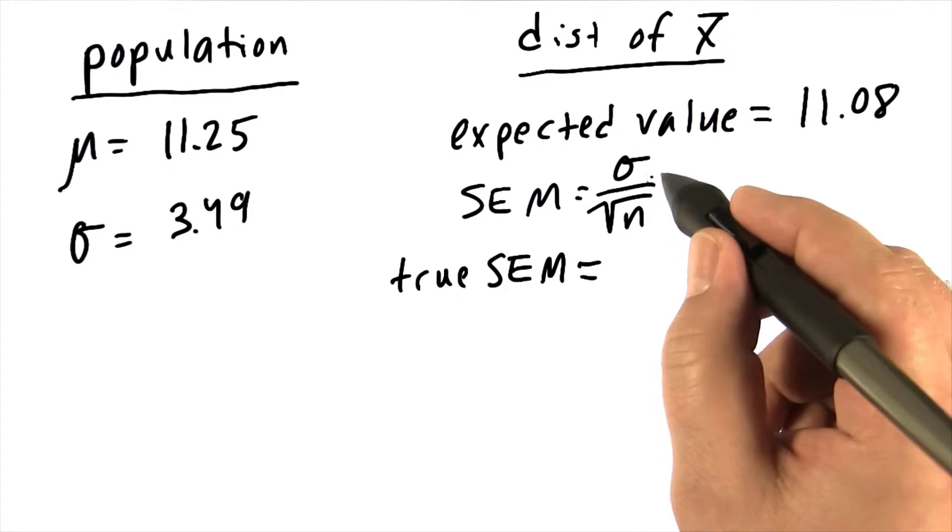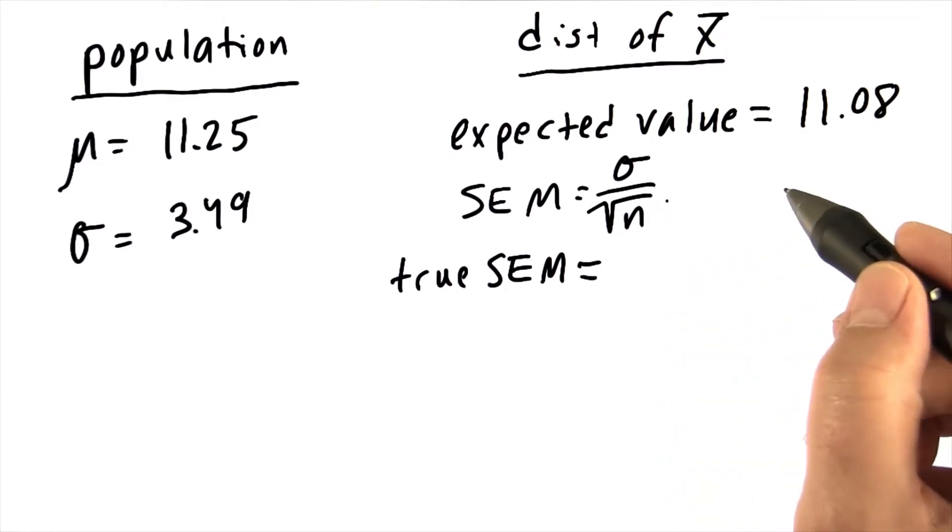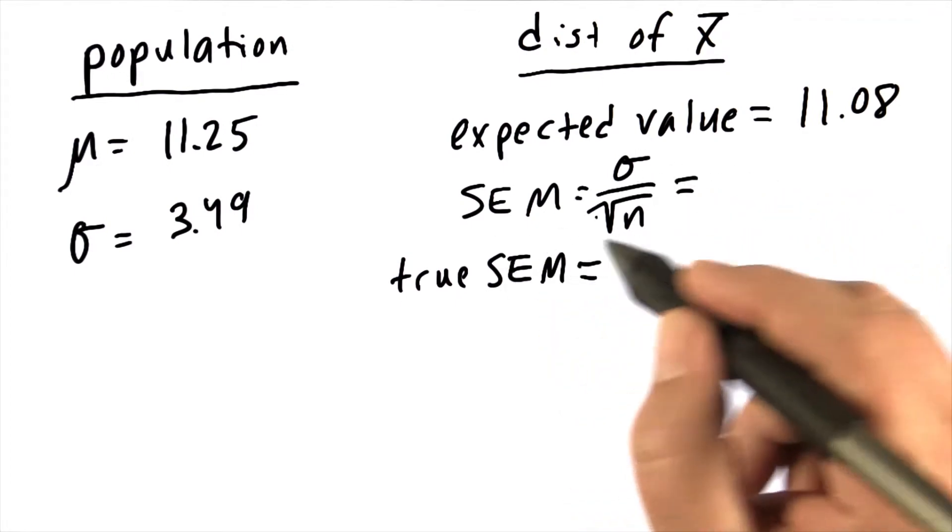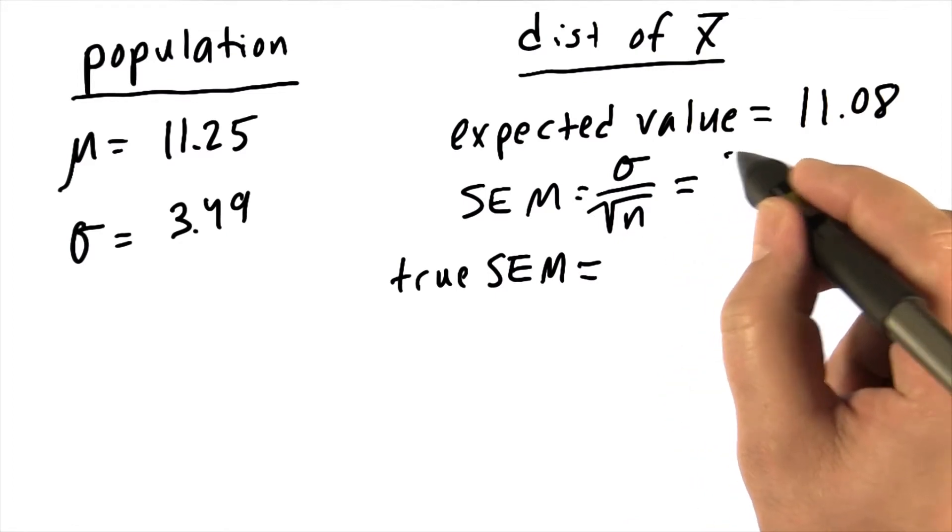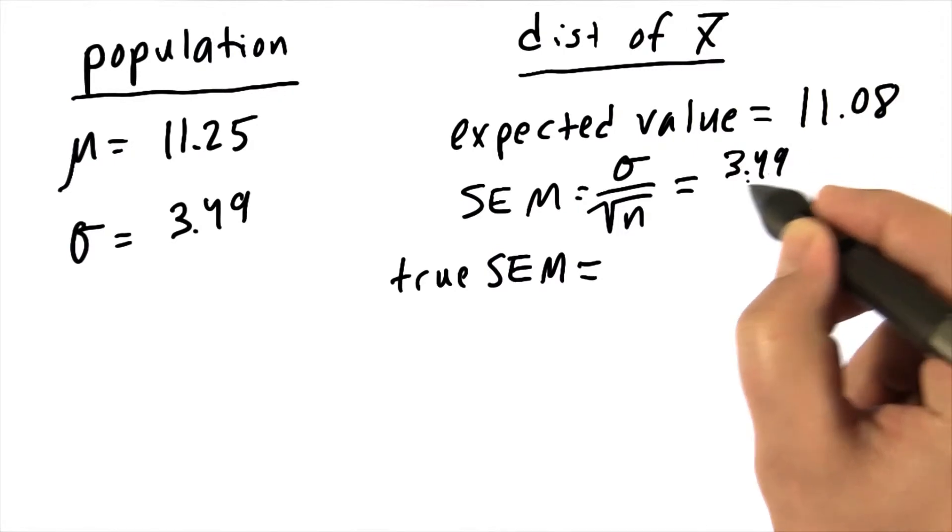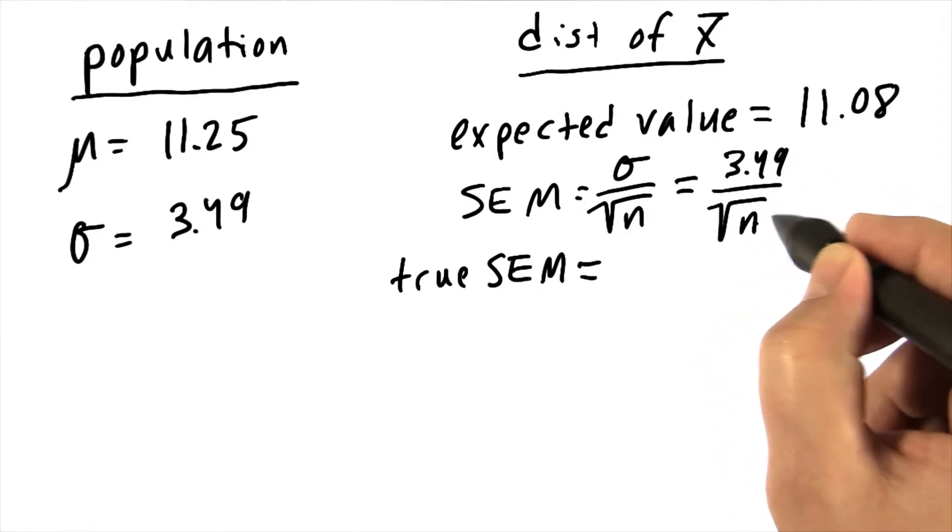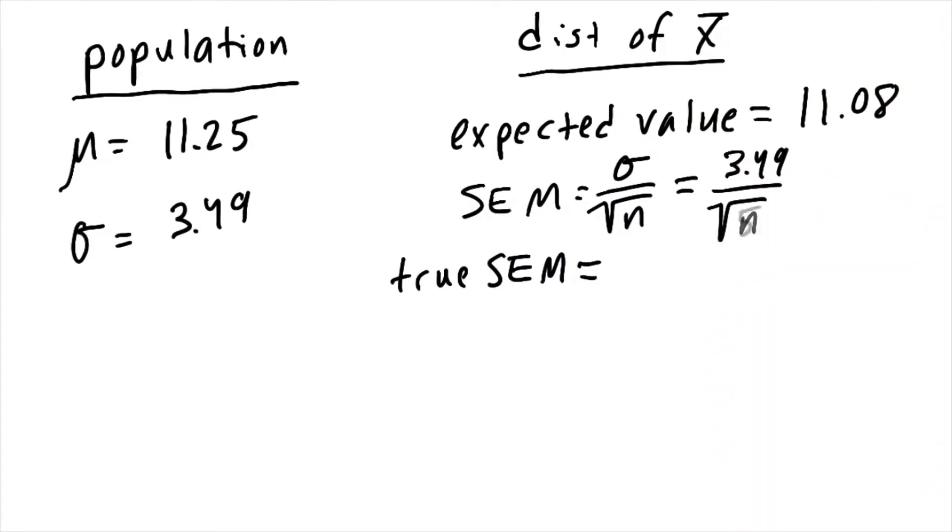The standard error of the mean, computed using this formula derived from the Central Limit Theorem, is sigma 3.49 divided by the square root of our sample size, five. So that's 3.49 divided by the square root of five, or n. That comes out to be roughly 1.56.